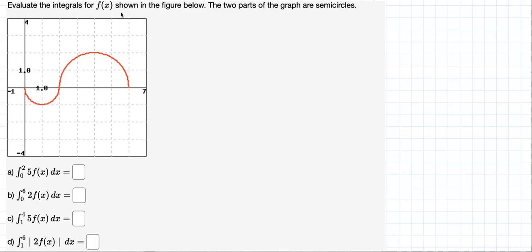Evaluate the integrals for f shown in the figure below. The two parts of the graph are semicircles. Okay, so let's label some points. This is 0, this is 2, this is 4, this is 6.